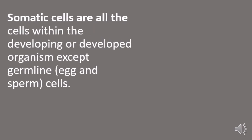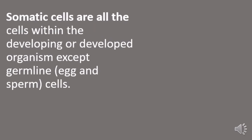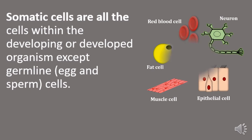Somatic cells are all the cells within the developing or a developed organism except the germline cells. For example, red blood cells, neurons, epithelial cells, muscle cells, and fat cells present in an organism are somatic cells.